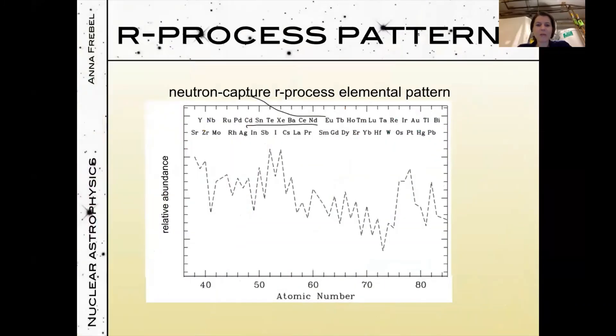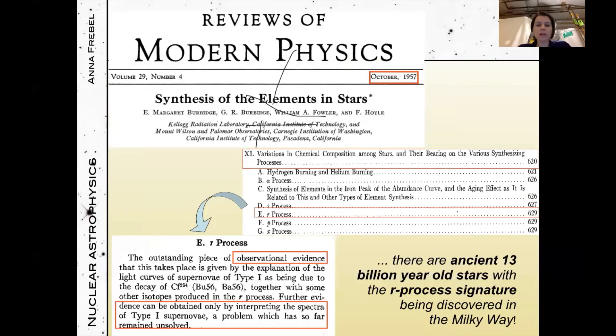If we take these abundances and plot them—the r-process itself sets this abundance pattern. This is what it looks like when you plot it as a function of atomic number—the elemental pattern. It has three so-called peaks: the first peak around strontium, yttrium, zirconium; the second peak around tellurium, iodine, and xenon; and the third peak around iridium and platinum. Why am I showing this to you? Because people have found this in stars. But before I tell you what the stars look like, let me tell you this is an old problem.